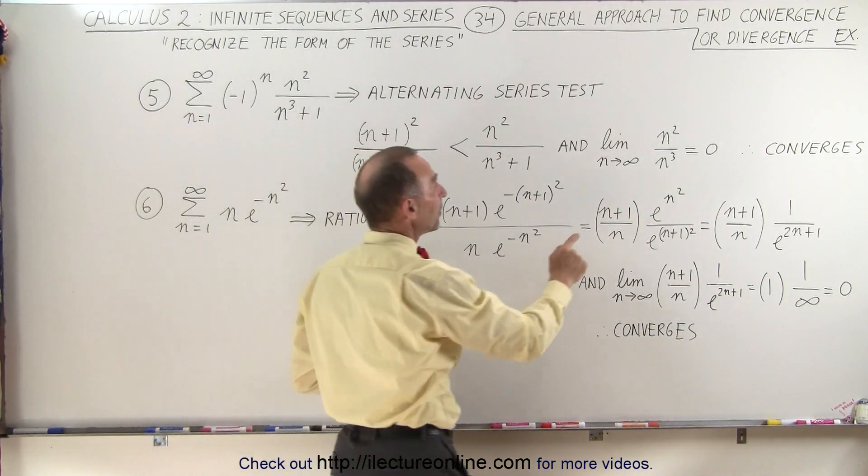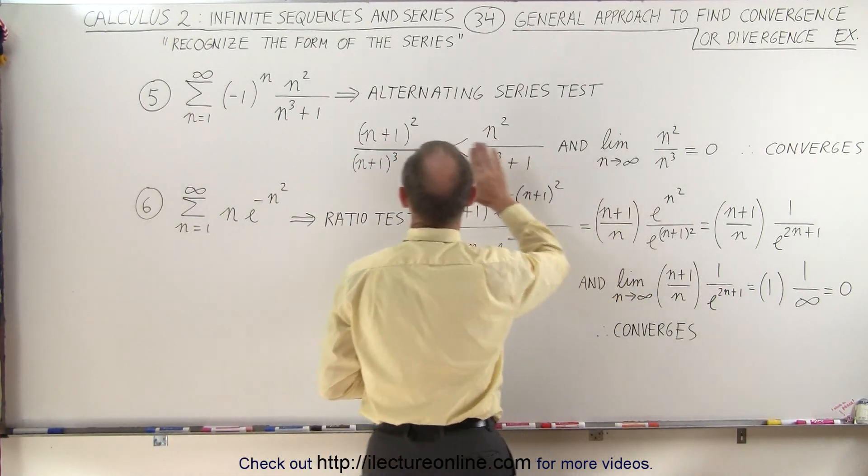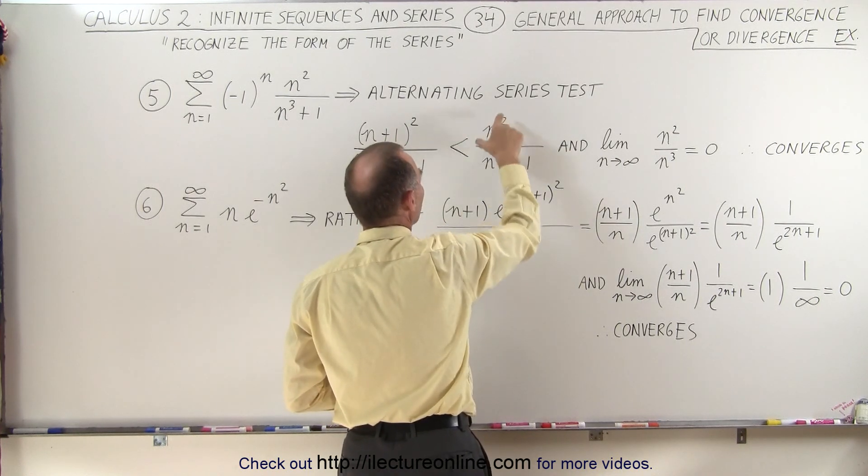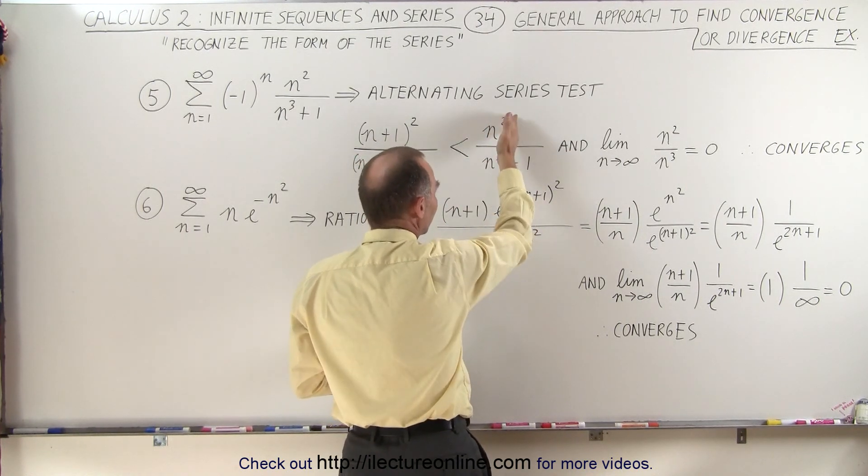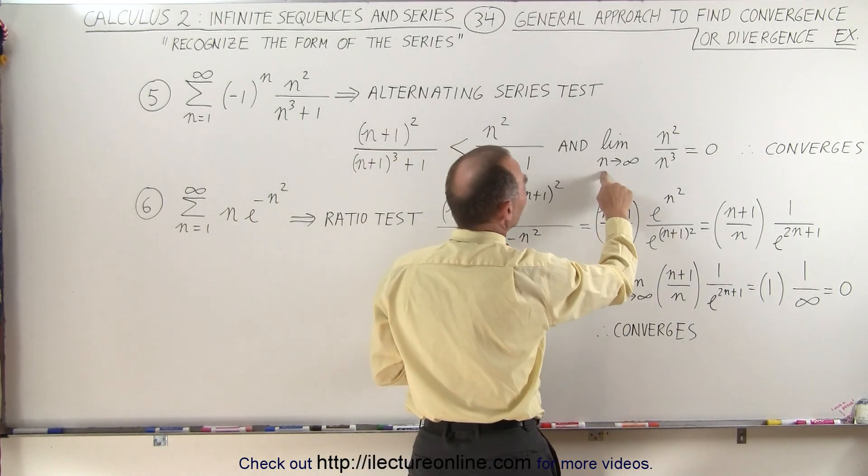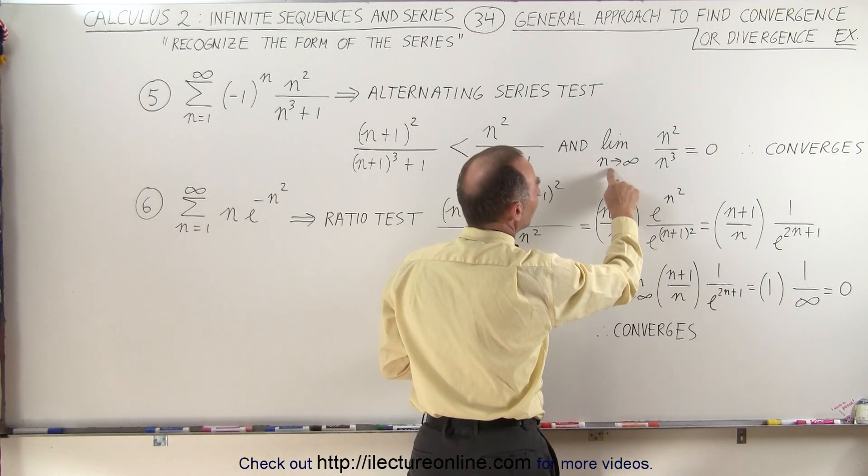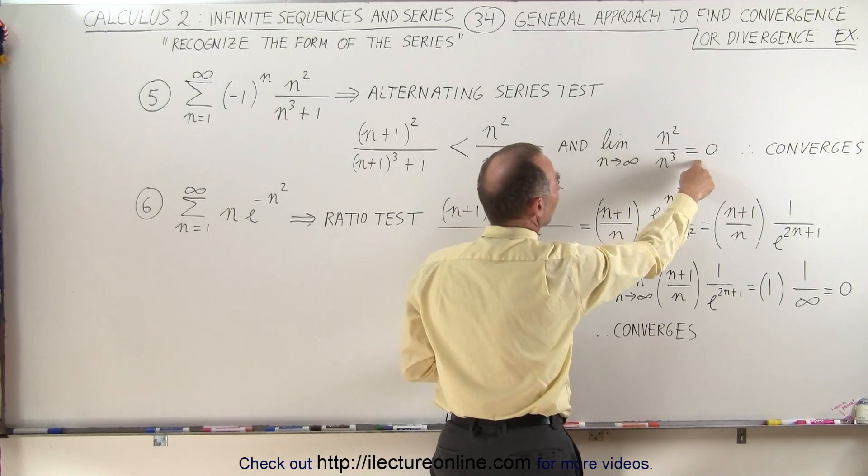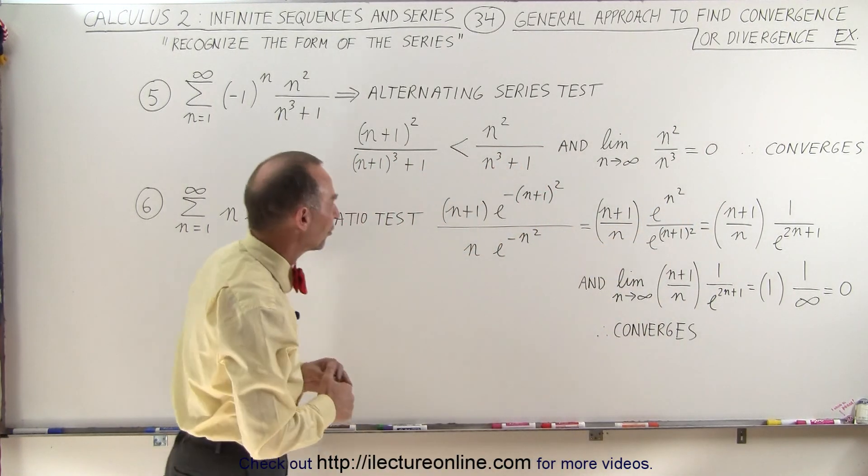Secondly, when we take the limit as n goes to infinity, we can ignore everything else except the first term in the numerator and the first term in the denominator. You can clearly see that when you go to the limit as n goes to infinity, this will then converge to zero, and therefore the series converges.